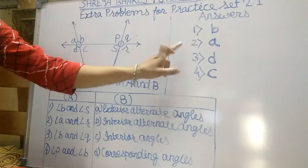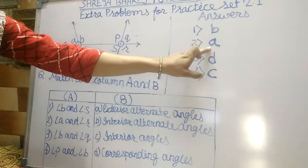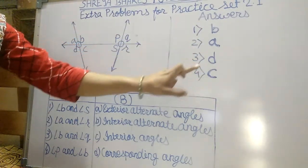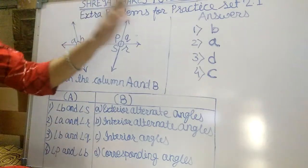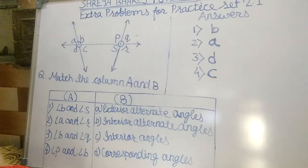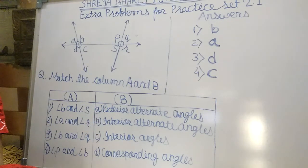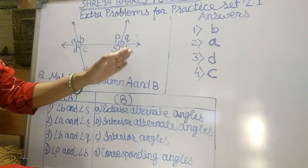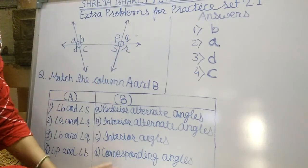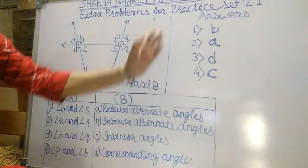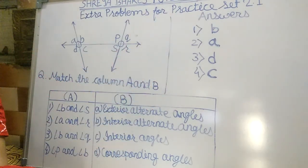So, to summarize: first is B, second is A, third is D, and fourth is C. These are all our matching columns A and B. Note it down and try to solve this. Again form such type of another figure and take down such type of another examples and try to solve the matching columns. Thank you.